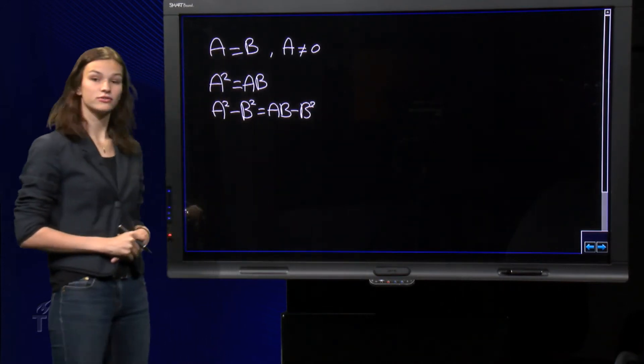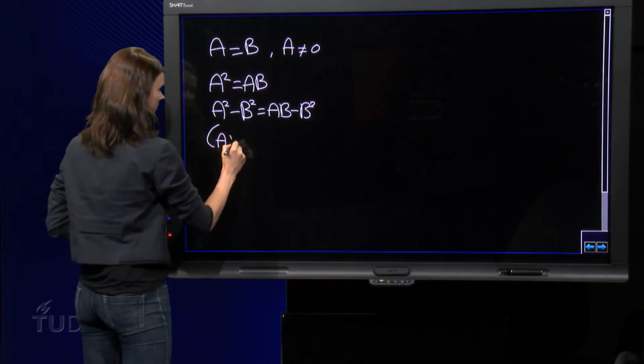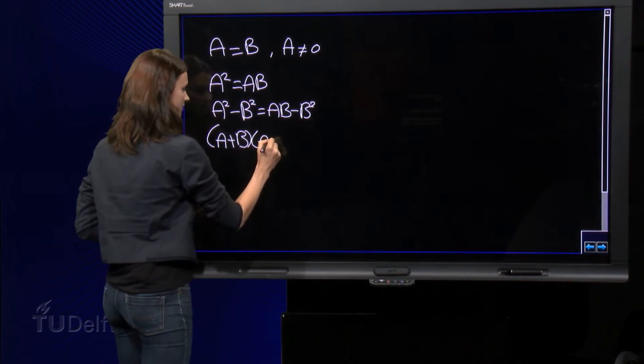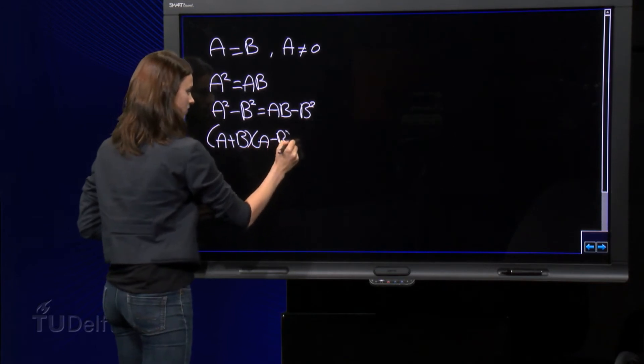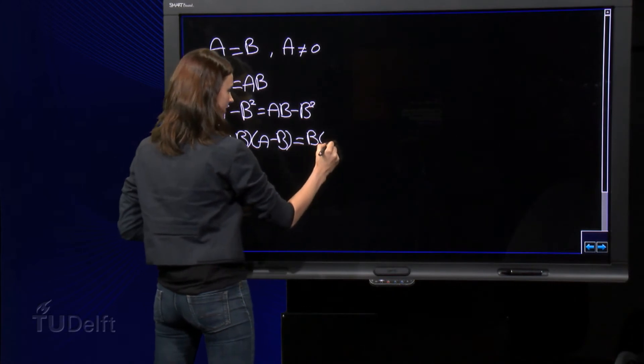Now, we factorize both sides, so this one becomes A plus B times A minus B and this side becomes B times A minus B.